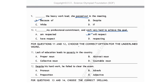For questions 11 and 12, choose the correct option for the underlined word. Lack of education leads to poverty in the country. Poverty is definitely an abstract noun, which cannot be seen or touched. Option B is correct. Next: despite his hard work, he failed to clear the exam. 'Despite' is a preposition. Option C is your correct answer.